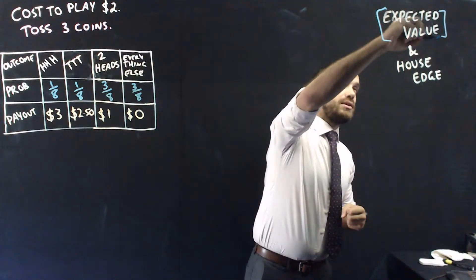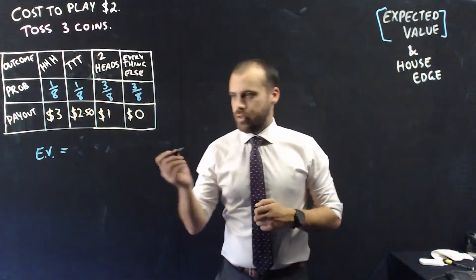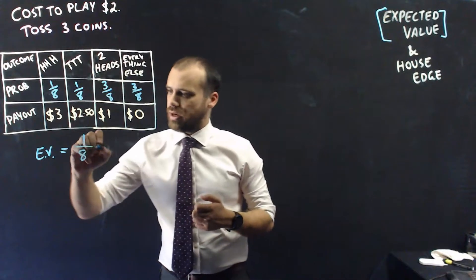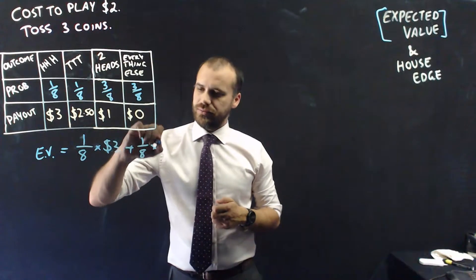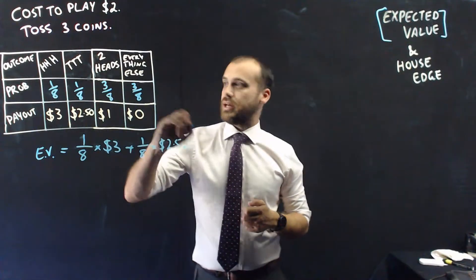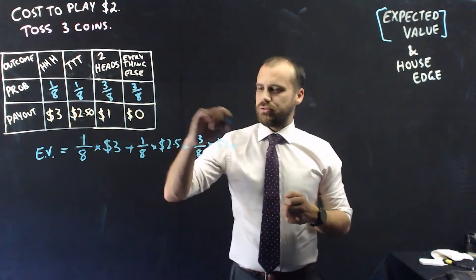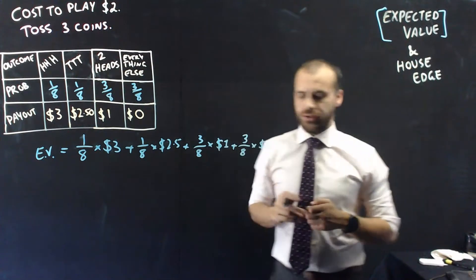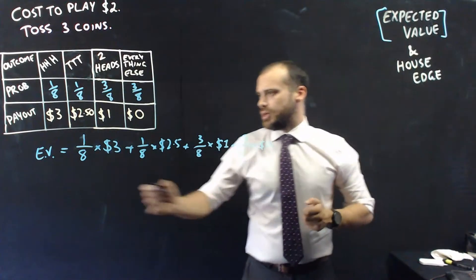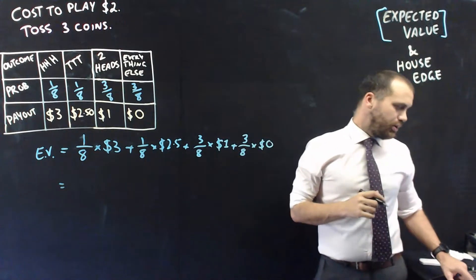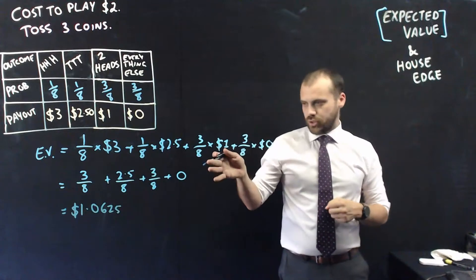This is the first step of the video. I'm going to talk about the expected value. Let's see how to work out the expected value, which we'll just call EV for now. 1 in 8 of the time, there's a 1 in 8 chance that I'm going to pay $3, plus there's a 1 in 8 chance that I'm going to pay $2.50, plus there's a 3 in 8 chance that I'm going to pay $1. If I type all of that into my calculator, I'll get $1.0625.